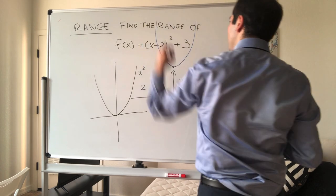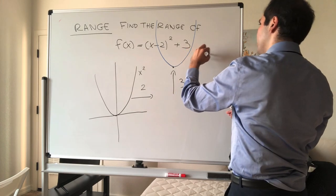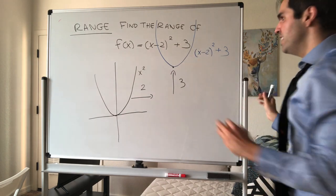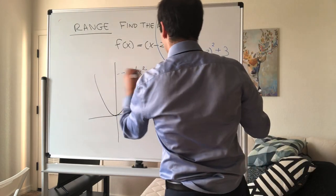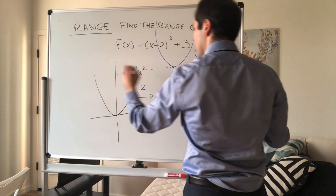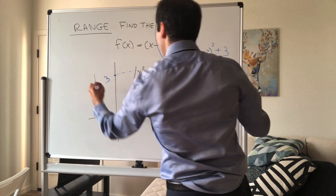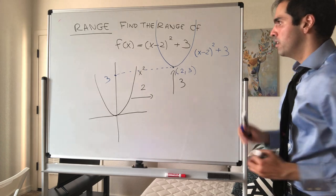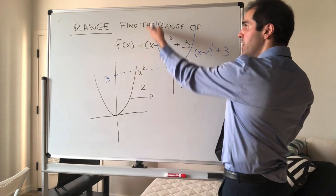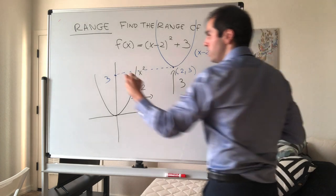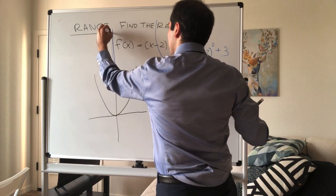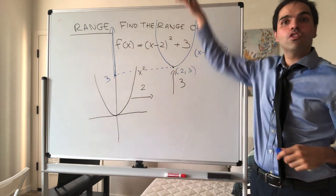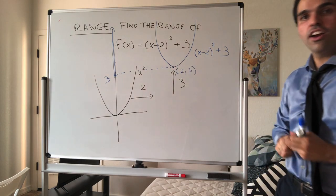So this is your new parabola now, x minus 2 squared plus 3. All right, and now the question is, what is the range of this? Well, notice, for instance, this vertex is 2, 3, so definitely the value 3 is attained because if you plug in x equals 2, you get that the output is 3. But also, if you look at the y values of this parabola, notice that all the values bigger than 3 are also attained.